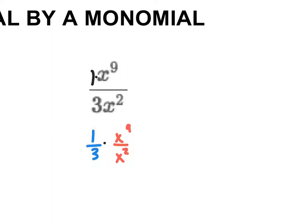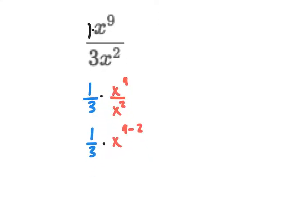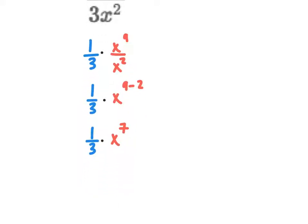So if I do this one: 1 divided by 3, I can't simplify that anymore — they don't have a common factor. So I'm just going to write this as 1 third, and then times x to the 9 minus 2 power, which gives me 1 third times x to the seventh power. Putting it all together: 1 times x to the seventh over 3 times 1 is just x to the seventh over 3. That's my answer.